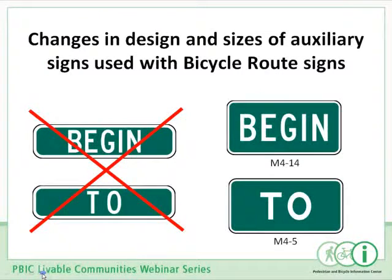Significant changes have been made to the designs and sizes of bicycle route auxiliary signs to improve consistency between Parts 2 and 9. These are now the same proportional type signs with the same layout as the route marker signs in Chapter 2D, rather than the thinner-type sign arrangements used previously.